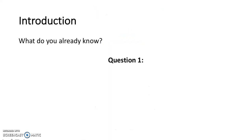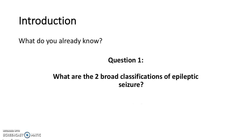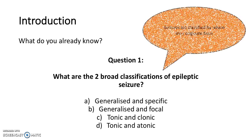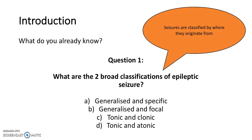So let's start with finding out what you already know. Question 1: what are the two broad classifications of epileptic seizure? Is that generalised and specific, generalised and focal, tonic and clonic, or tonic and atonic? A clue here is seizures are classified by where they originate from. The answer is generalised and focal, because they can either originate from all over the brain or in one specific area.